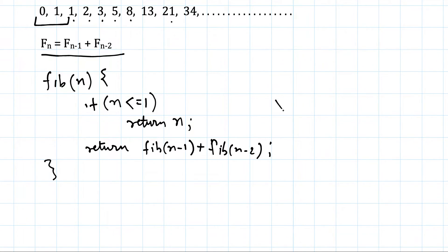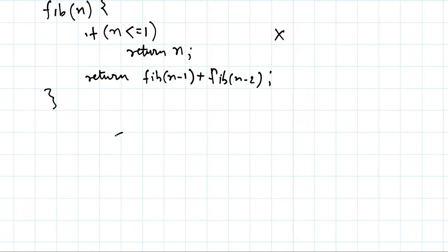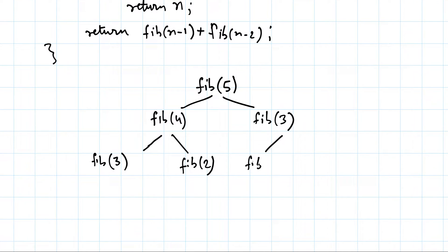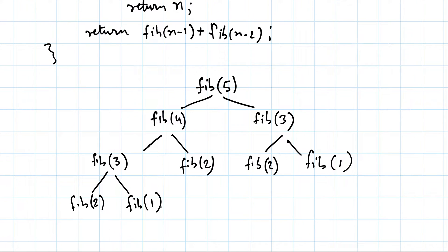Let's say we are calculating Fib(5). It will depend on Fib(4) and Fib(3). I'm not taking a higher number because the tree doubles at every step, growing exponentially. Fib(4) depends on Fib(3) and Fib(2). Fib(3) depends on Fib(2) and Fib(1). And again Fib(3) depends on Fib(2) and Fib(1), and those break down further into Fib(1) and Fib(0).